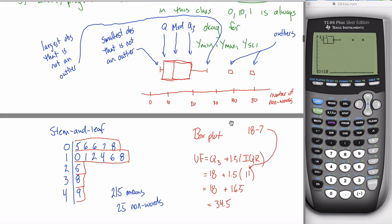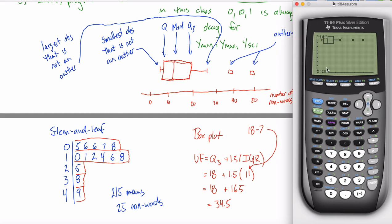However, it kind of makes sense that it's 34 and a half because my calculator decided that this observation over here at 25 was not an outlier. So 25 must be less than my upper fence. But this observation over here at 38 was an outlier. So 38 must be above my upper fence, above 34 and a half.